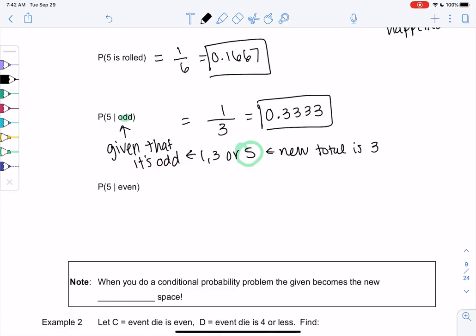So the given essentially changes the total. Let's try another one. What if it's given that it's even? So this is saying it's even. Meaning, it's not 1 through 6. It's only 2, 4, or 6 because those are my even numbers. So my total is 3.